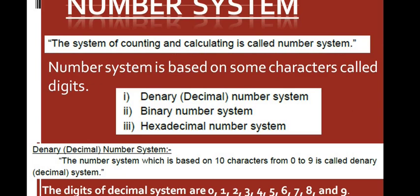Now let us see what is meant by number system. The number system is nothing but the system of counting and calculating. In this session we are going to see three different types of number system: the first one is the denary number system, the second one is the binary number system, and the third one is the hexadecimal number system.